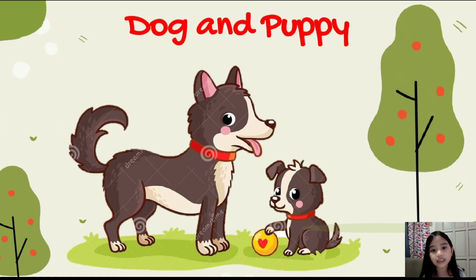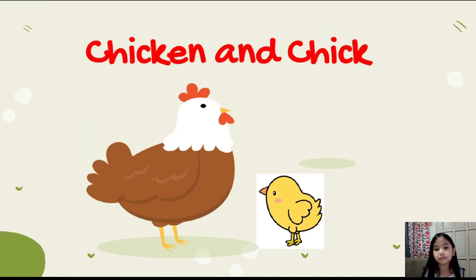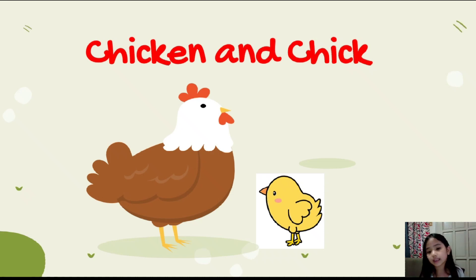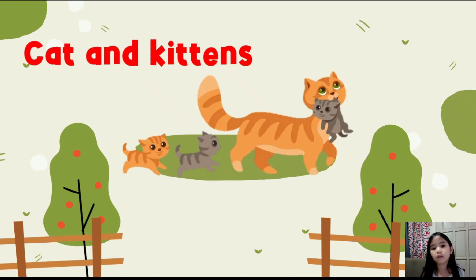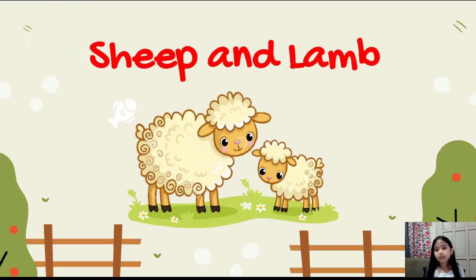This is a dog and his baby is called a puppy. This is a chicken and his baby is called a chick. This is a cat and his babies are called kittens.